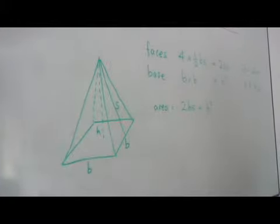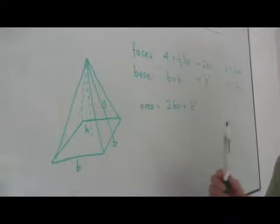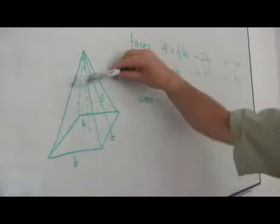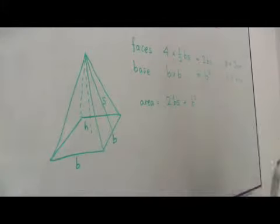So, first of all, we can see that on this pyramid there are actually five faces. Two slanting faces at the front, two that we can't see, and the base. So, there are five altogether.